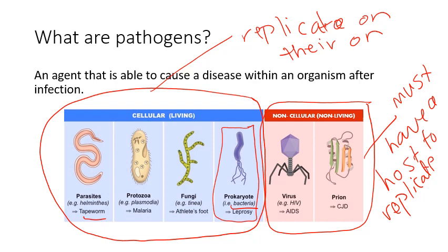Whereas our non-cellular pathogens — things like viruses and prions — actually need to be within a host. They need to have infected a living organism and will then use that living organism's machinery to help them replicate. They cannot replicate on their own.